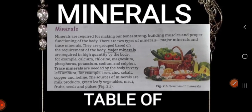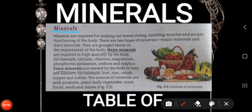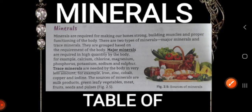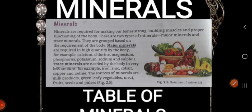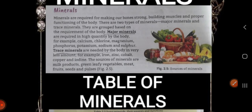Next topic is minerals. Minerals are required for making our bones strong, building muscles, and proper functioning of the body. There are two types of minerals: major minerals and trace minerals. Major minerals are required in high quantity by the body, for example calcium, chlorine, magnesium, phosphorus, potassium, sodium, and sulfur. Trace minerals are needed by the body in very small amounts, for example iron, zinc, cobalt, copper, and iodine. The sources of minerals are milk products, green leafy vegetables, meat, fruits, seeds, and pulses.